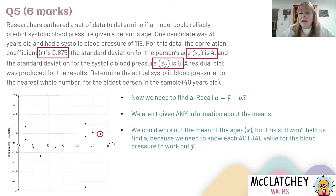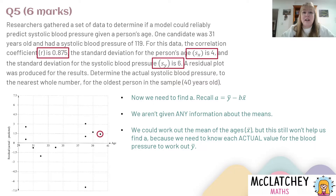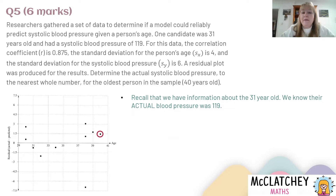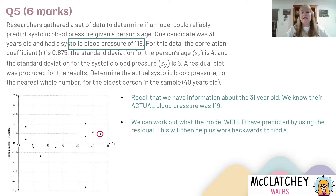We could work out the mean of the ages — there are people who are 31, 32, 34, three 38-year-olds, a 39-year-old and a 40-year-old — but that really isn't going to help us because we don't know any actual blood pressure values except for that one person who is 31. That's probably where a lot of students got stuck. They worked out the mean of the ages and thought it was impossible — but it's not, because we do have some information about our 31-year-old: their actual blood pressure is 119.